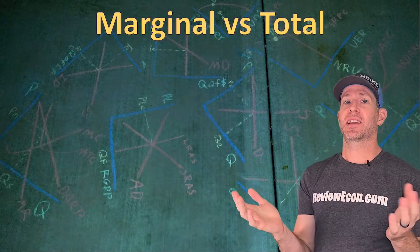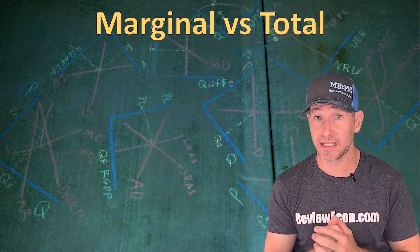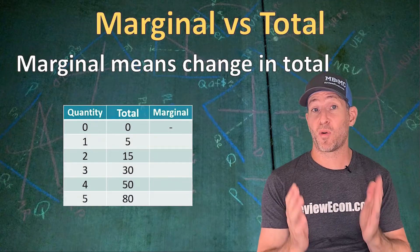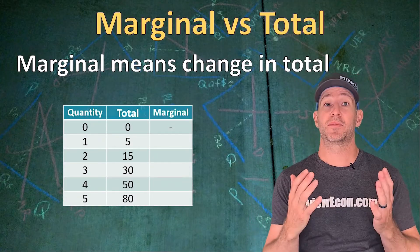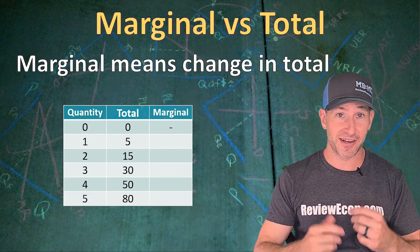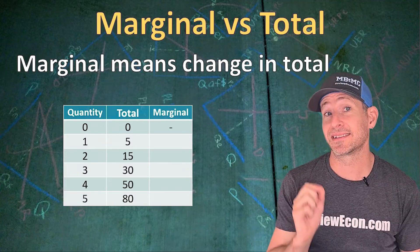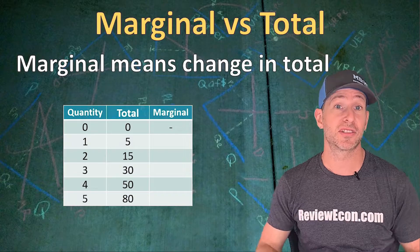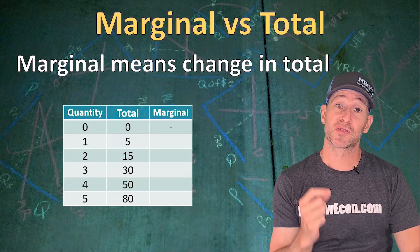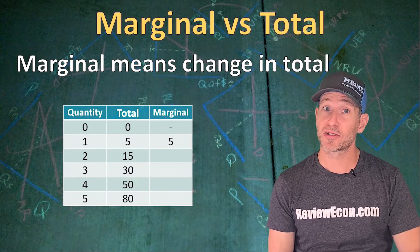Before we can understand how decisions are made at the margin using marginal analysis, we need to know what marginal means. Marginal means change in the total. Here we have a table with different quantities and different total amounts. This could be marginal cost, marginal benefit, marginal utility, marginal revenue, marginal revenue product, marginal social benefit, or any other terms you're likely to see at some point within this class. So if we go from a quantity of 0 to a quantity of 1, the total goes from 0 to 5. The change in the total is 5 — that's the marginal amount.